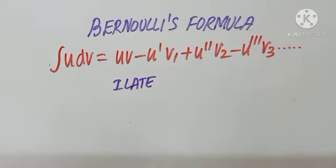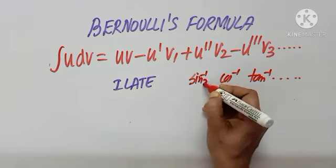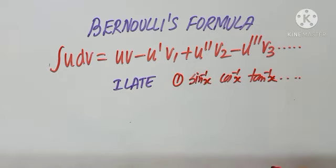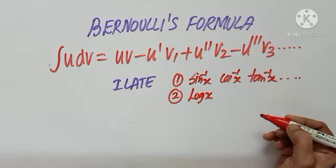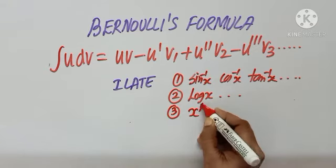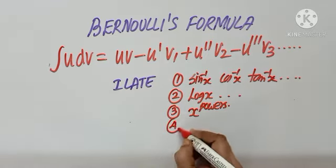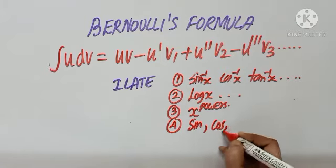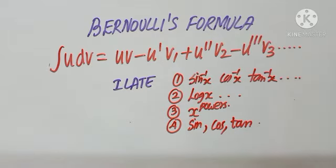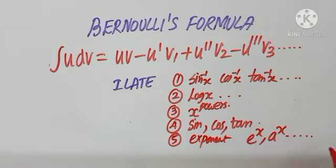For choosing u and dv, we use the ILATE principle. First, check whether inverse is present — that is sine inverse, cos inverse, tan inverse — that is the first priority. Second, if inverse is not present, choose logarithm. If that is also not there, choose algebraic — x powers like x, x squared, x cubed. If that is also not there, fourth priority is trigonometric functions like sine, cos, tan. The last priority is exponent — e power x, a power x, and so on.